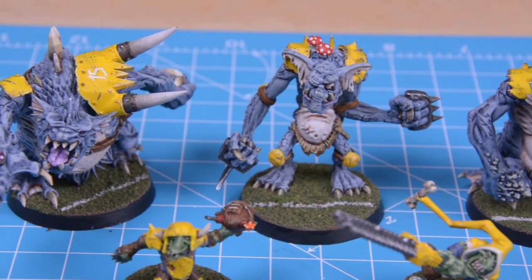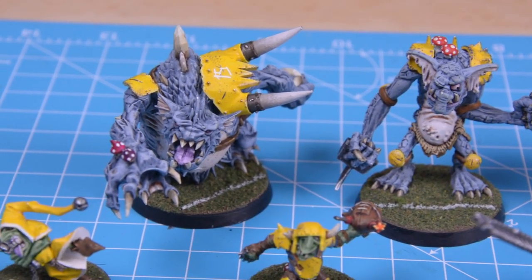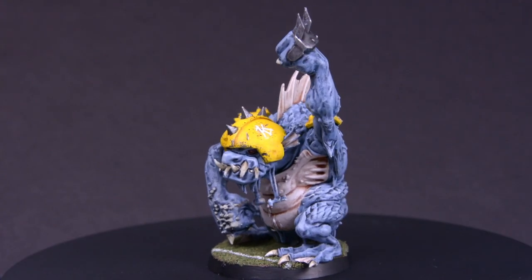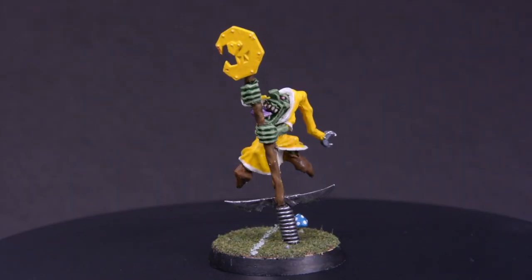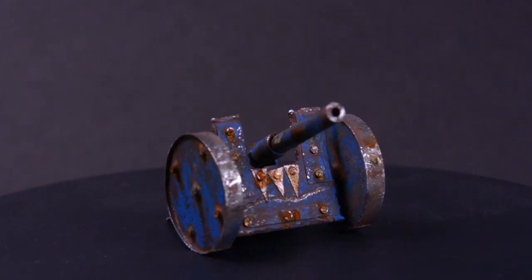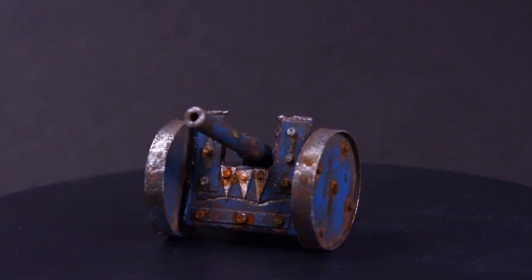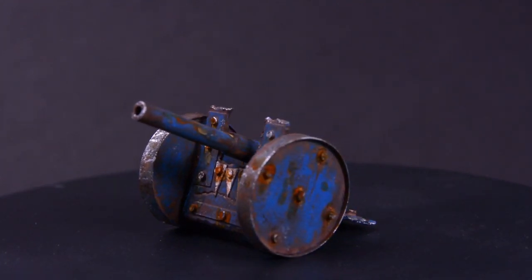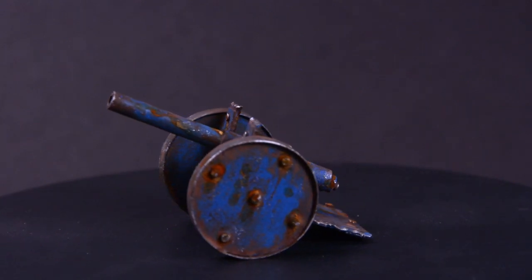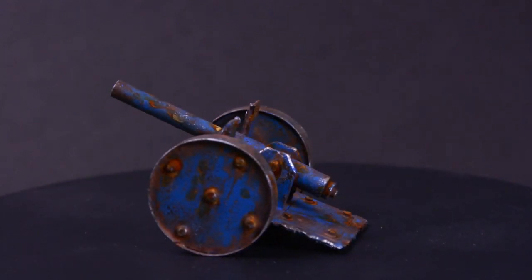Another way is to sculpt new features on a model, typically out of green stuff, like I did with the helmet of this troll or this pogo stick. There's also scratch building, where you build something from scratch out of basic materials instead of kit. So, you can do kit bashing and sculpting and scratch building and everything in between.